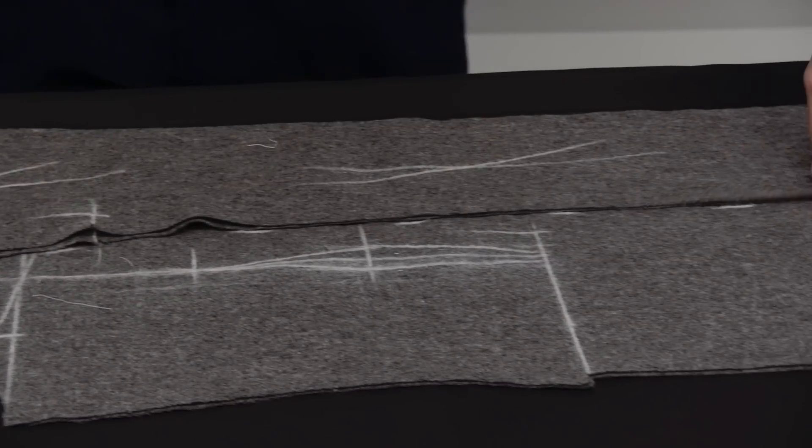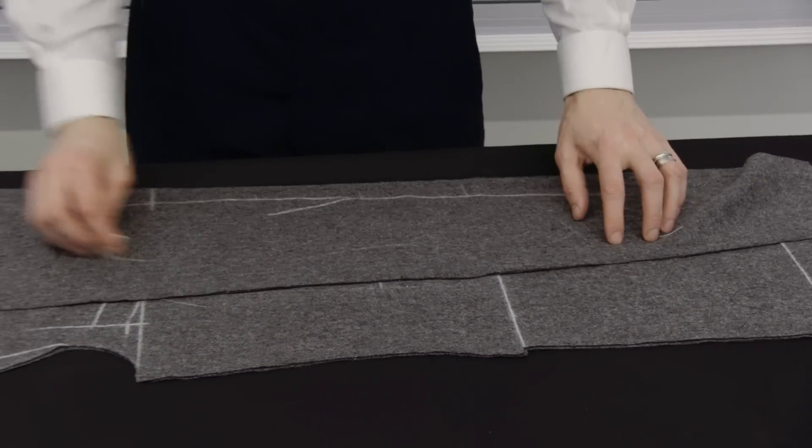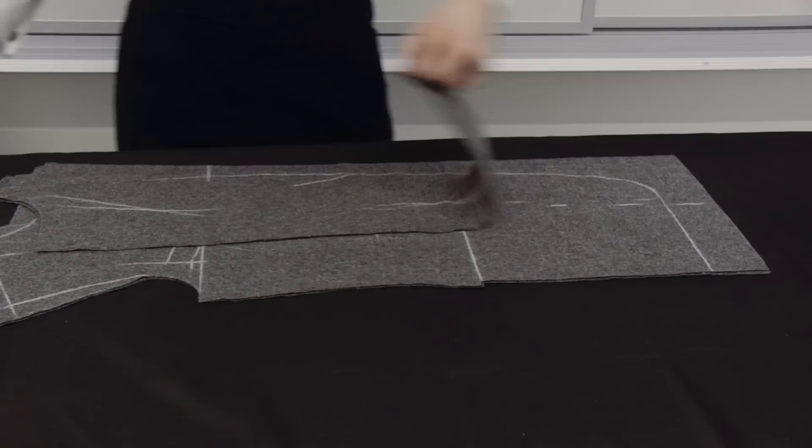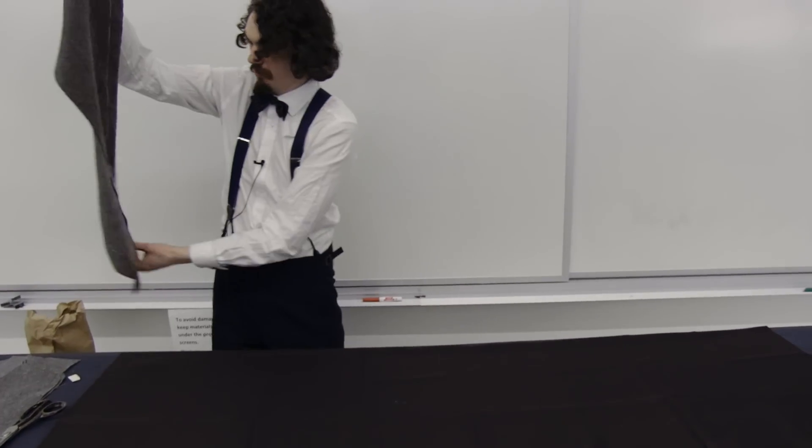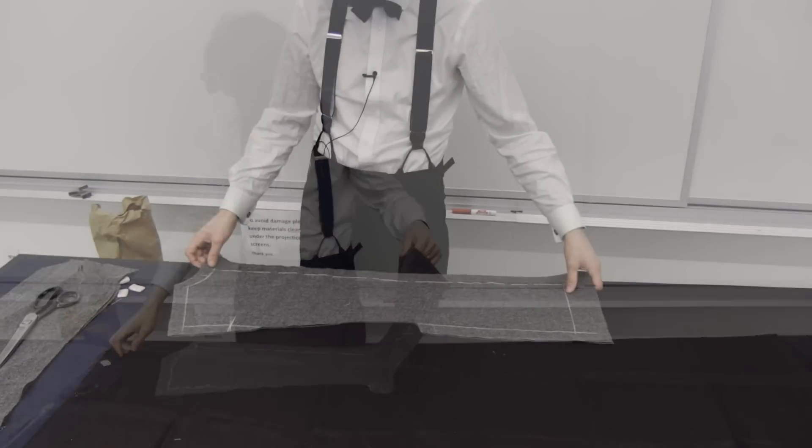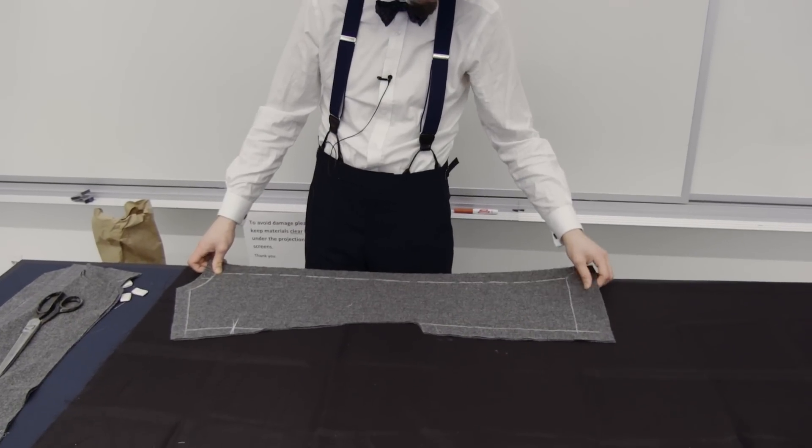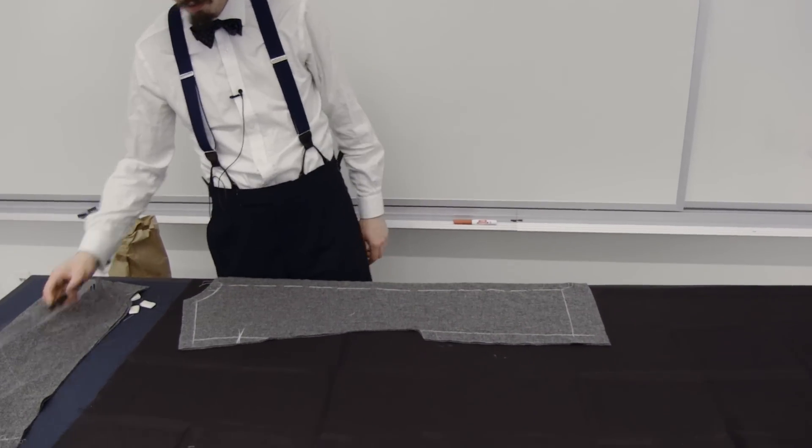X's indicate wrong side. Now, we set our forepart to one side for a moment. We lay our back down first. Match the center back seam with the folded edge of the lining.